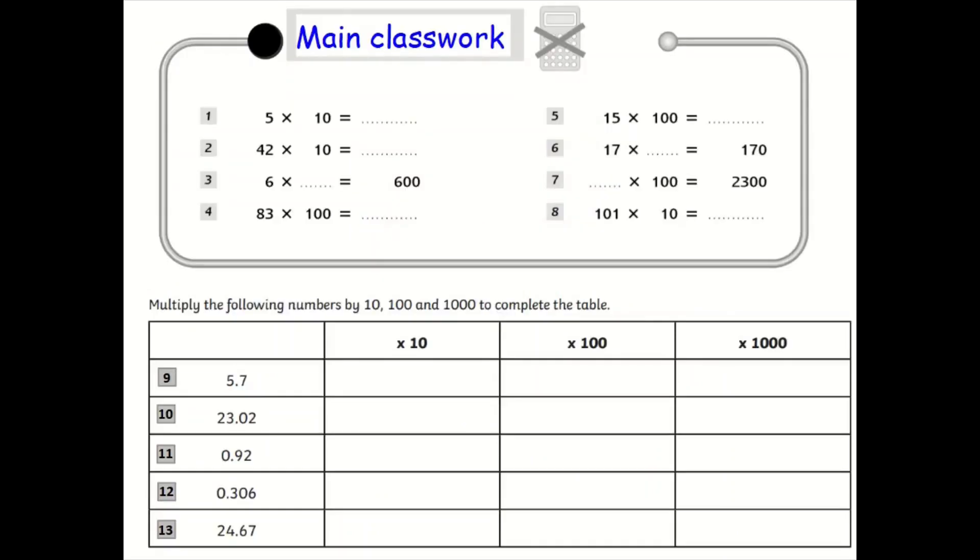Main classwork. Here's your main classwork. Write out the questions in your book and fill in the gaps here. This is for whole numbers. And then questions 9 to 13, you've got some decimals to consider. So draw out this table and fill in the blanks. Multiply this number here by 10. So this would be 57, for example. And then you're multiplying this original number by 100. Not this number here, but you're multiplying 5.7 by 100 and getting your answer here. That's the main classwork.